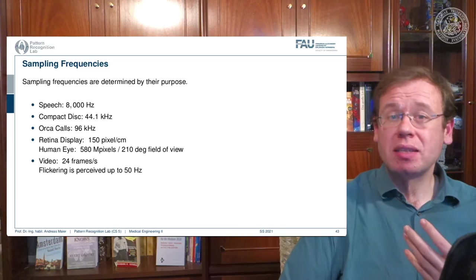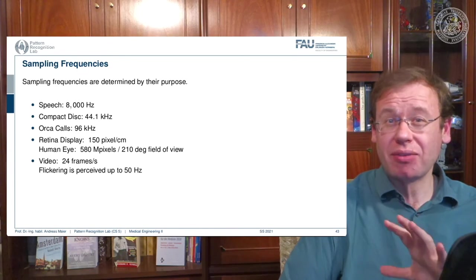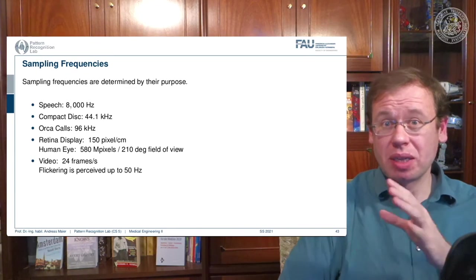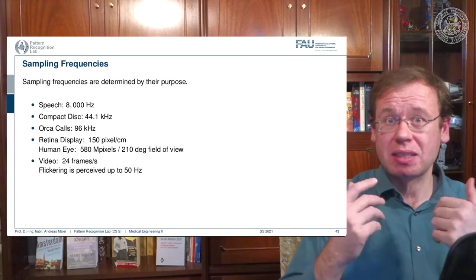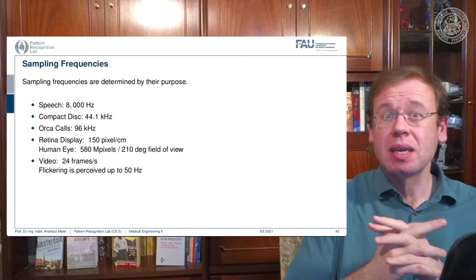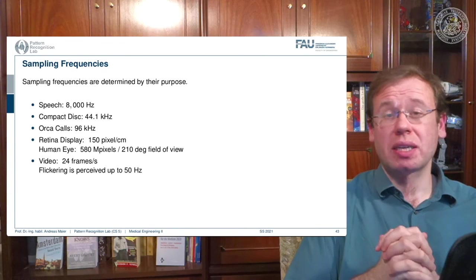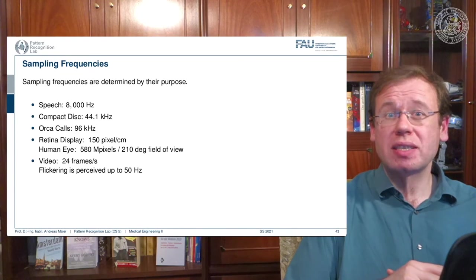Your eye is using many, many tricks in order to give you the impression that you have this resolution over the entire field of view, because it memorizes where you looked at and saves the high resolution information and then place this back to your brain. So your eye is definitely not working like a camera system and it doesn't have uniform resolution,